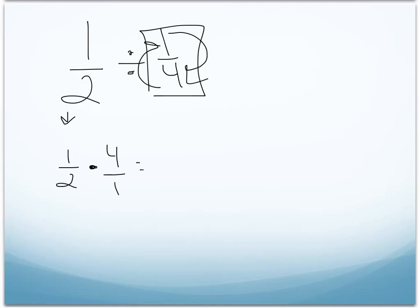This ends up being pretty simple. You use the rules for multiplying fractions. You multiply the numerator by the numerator, which gives you 4. Multiply the denominator by denominator, which gives you 2. 4 divided by 2 is 2.